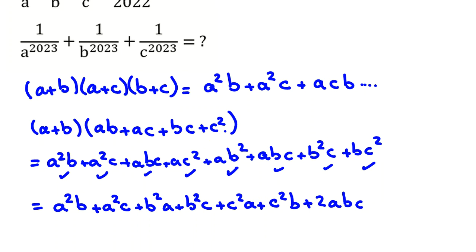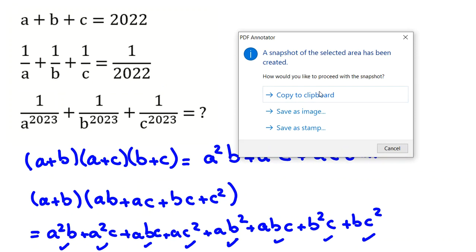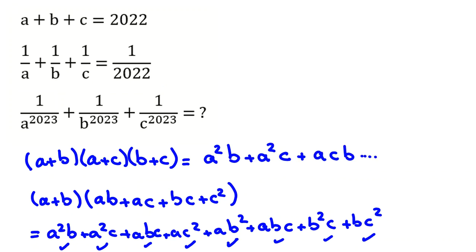There are around 10 to 20 important identities you have to learn — algebraic identities like this one — that are useful from qualifying level up to IMO. If you want to know them, feel free to send a message to my WhatsApp number in the description. Now let's solve the rest of the problem. We have A plus B plus C equals 2022, and 1 over A plus 1 over B plus 1 over C equals 1 over 2022. We want to focus on these two parts.